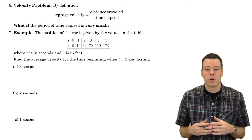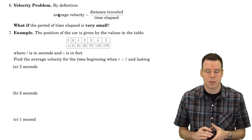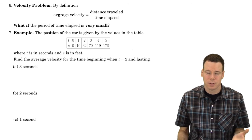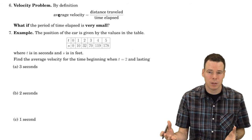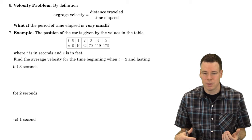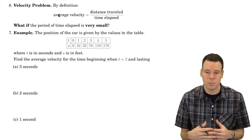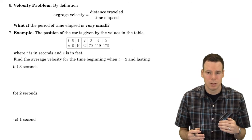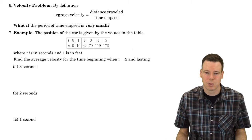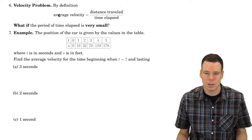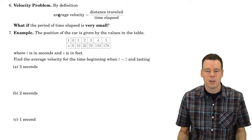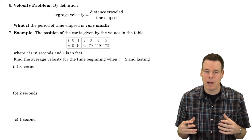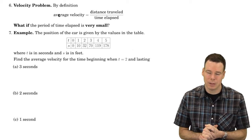On average I was traveling 3 meters per second, but I could have started off slow, sped up in the middle and then slowed down at the end. So I could have been traveling faster than 3 meters per second sometime in the middle but slower than 3 meters per second at the beginning and the end. All I know is that on average my average velocity was 3 meters per second.